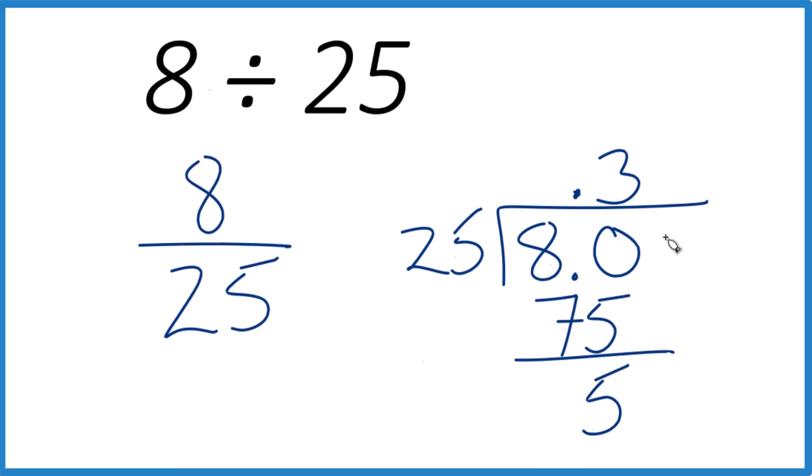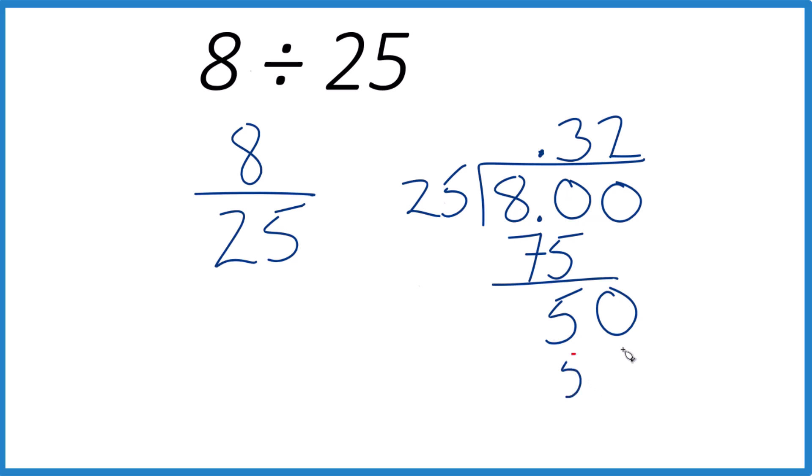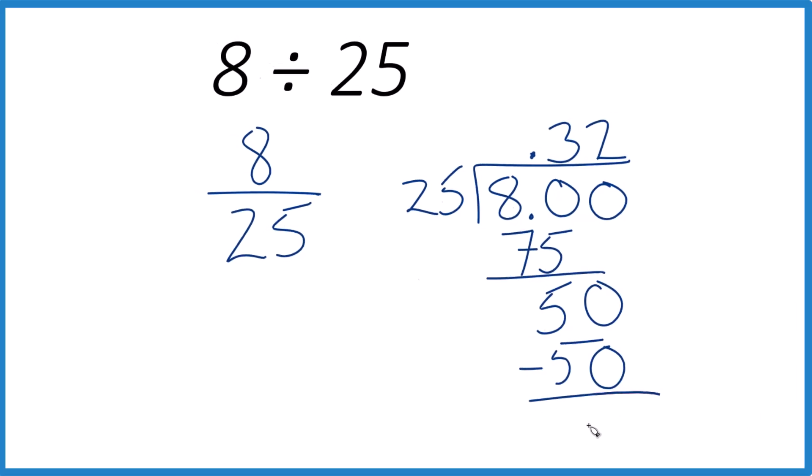It doesn't go into 5, but we could put another 0 here and it's still 8. We can move over a decimal place. We can pull this 0 down. Now 2 times 25, that's 50. When we subtract, no remainder. So we're done.